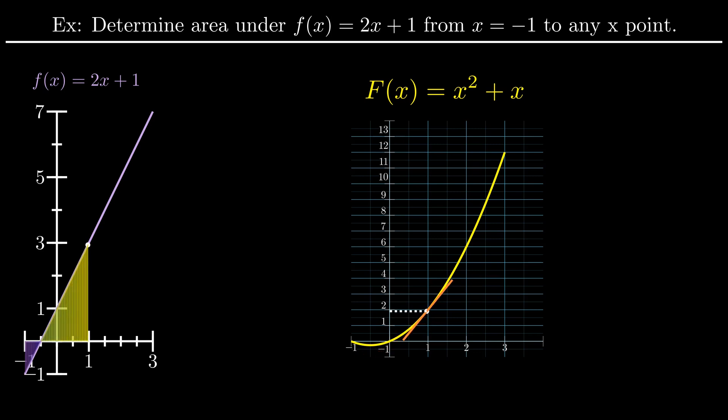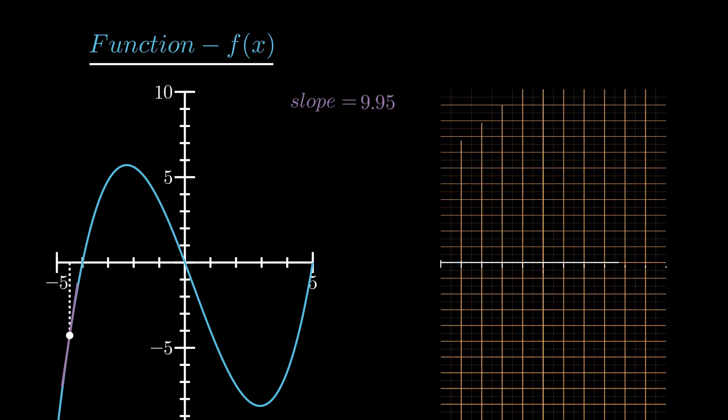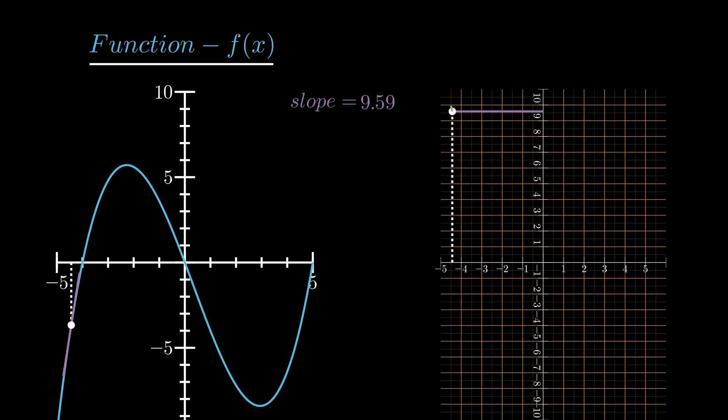So without getting ahead of ourselves too much, we're going to go to the basics. In order to integrate, you've got to be able to differentiate. It's useful to think of integration as the reverse process of differentiation. We sometimes call this taking the anti-derivative of a function. If we have a look at a function, we can look at the slope values, the gradient at every x point. If we map the values of those slopes onto another graph, that's what we call a derivative.